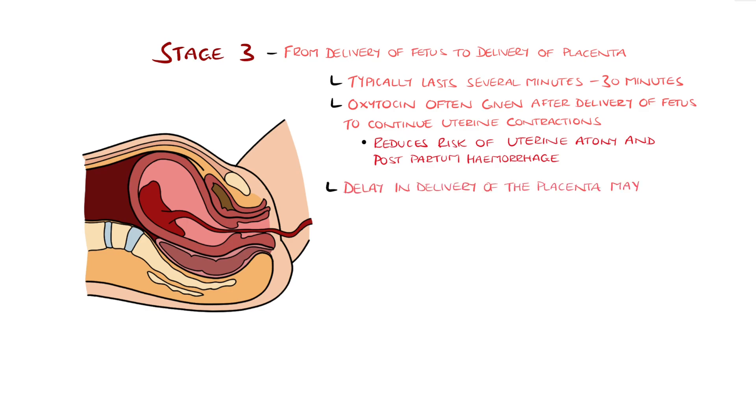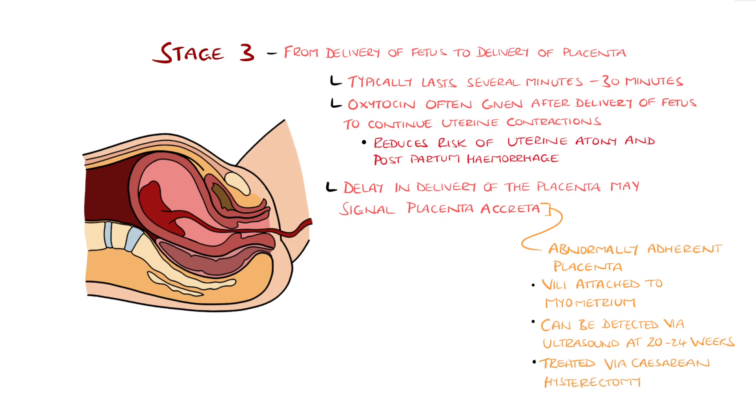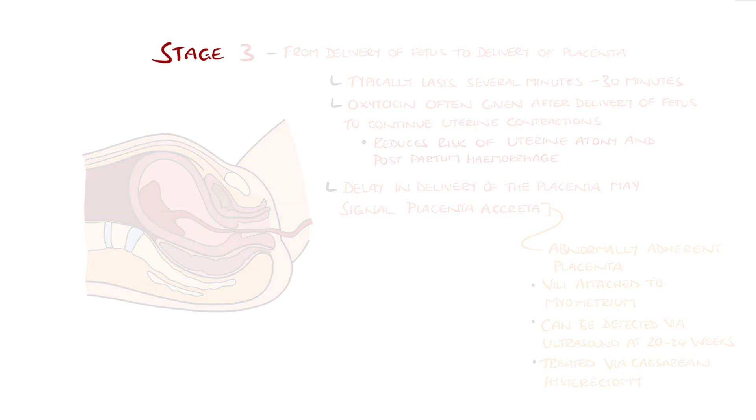If delivery of the placenta is delayed, it may signal another potential complication, placenta accreta, which is an abnormally adherent placenta where the villi are attached to the myometrium rather than stopping just before it, at the nitabuklea. This can be found via ultrasound prior to delivery, at roughly 20-24 weeks gestation, and is often treated with caesarean hysterectomy.